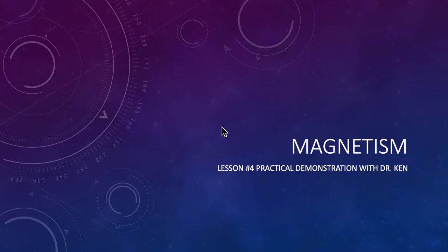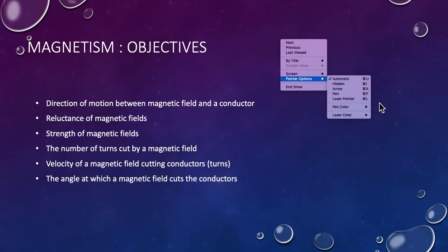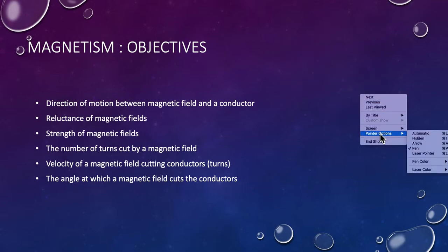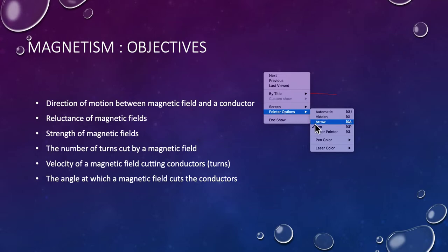This is electromagnetism, our practical demonstration lesson number four. What are the objectives of this particular lesson? Let me get my pen on. It's being a bit of a pain today.